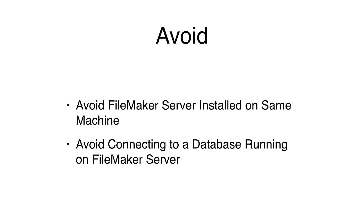You should avoid running FMPro Migrator on the same machine which is running FileMaker Server, because FileMaker Server intercepts all ODBC connections to port 2399, so you cannot connect to a database unless it is being served by FileMaker Server on that machine. It makes troubleshooting more difficult. FMPro Migrator has the ability to delete unstored calc fields within your FileMaker database, so don't connect to your production database server.